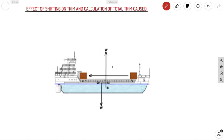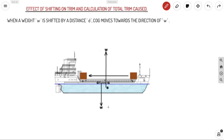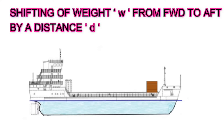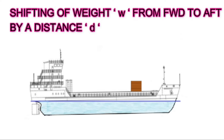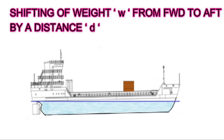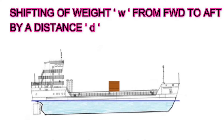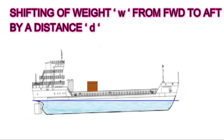Now we consider the effect of shifting of weights on trim and how to calculate total trim caused. In the case of shifting, we have an initially even keel vessel with a weight forward. When this weight is shifted towards aft, a trim by stern is caused — aft draft increases and forward draft decreases.